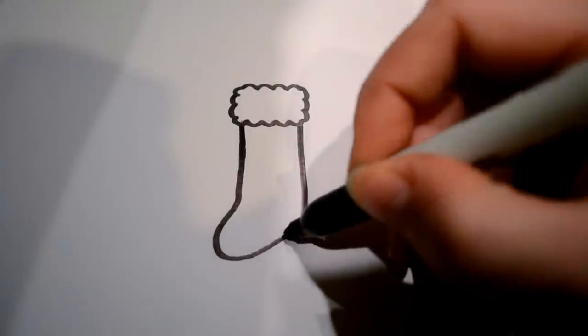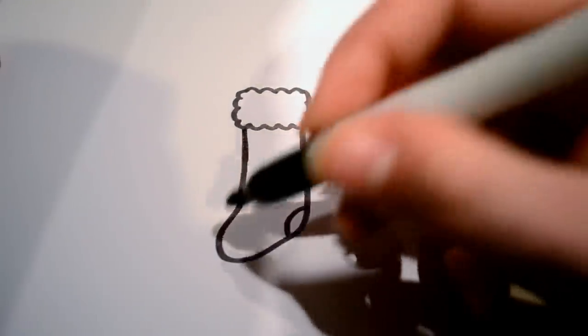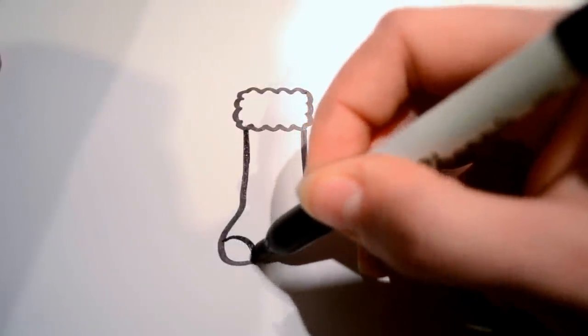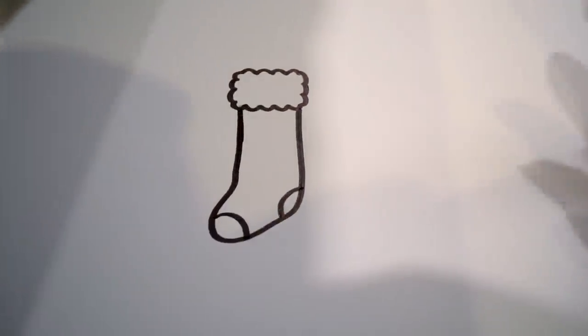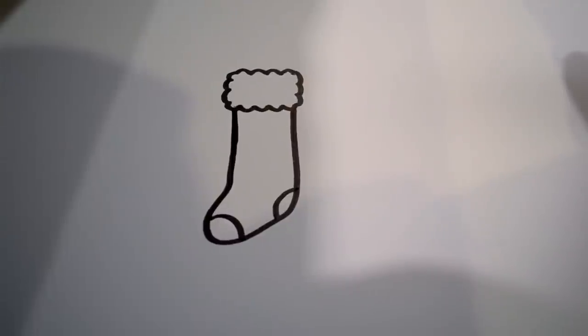And then you're going to want to draw two semi-circles that just go on the toe and then on the heel just for some detail.